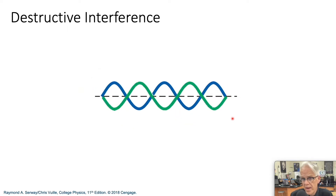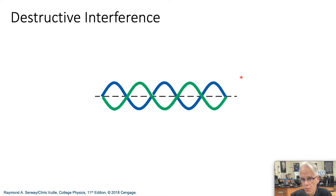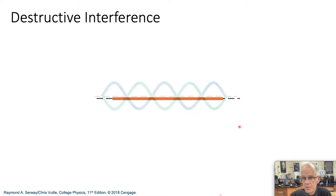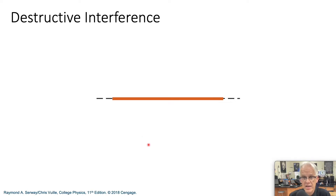Now, the blue wave and the green wave have the same frequency and amplitude, but are 180 degrees out of phase. In this case, the crest of one coincides with the trough of the other, so one wave is inverted relative to the other. The resultant wave when they combine has zero amplitude. These two waves are said to be out of phase and to exhibit destructive interference.